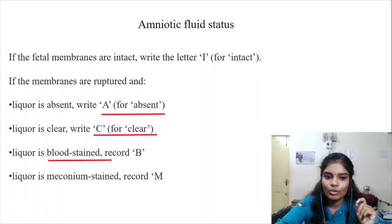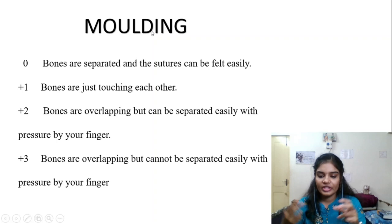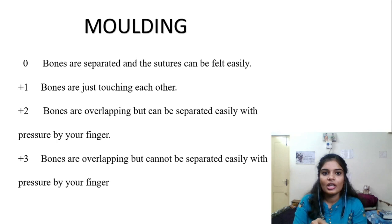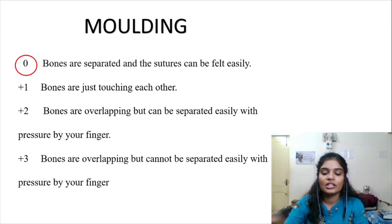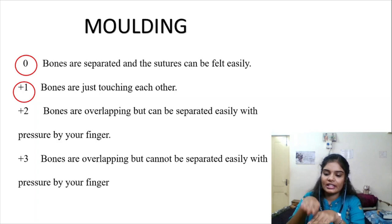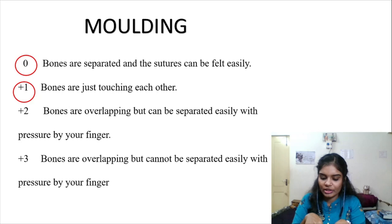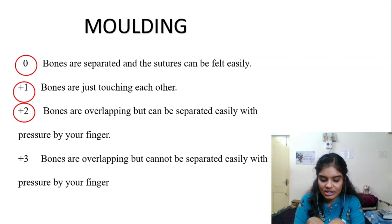Moulding is assessed by feeling suture lines on the fetal head during PV examination. If both bones are separated and sutures easily felt, it is 0. If bones are just touching, it is 1+. If bones are overlapping but can be separated with pressure, it is 2+. If bones overlap and cannot be separated even with pressure, it is 3+ — severe moulding.